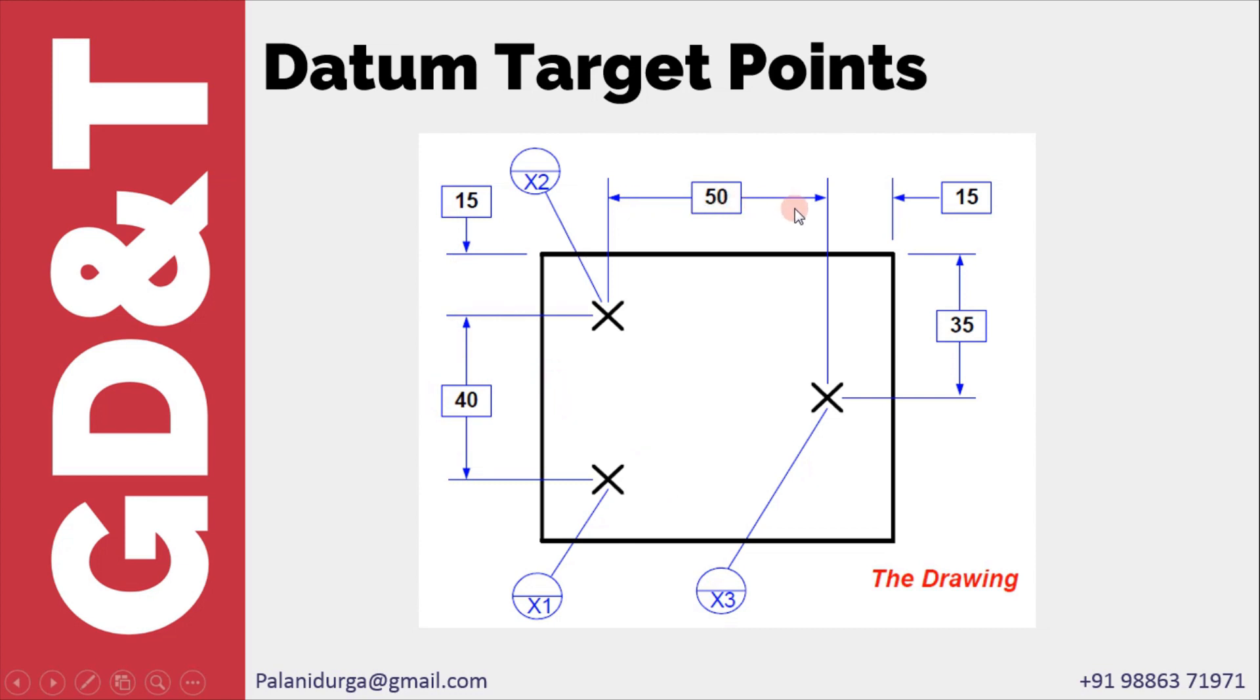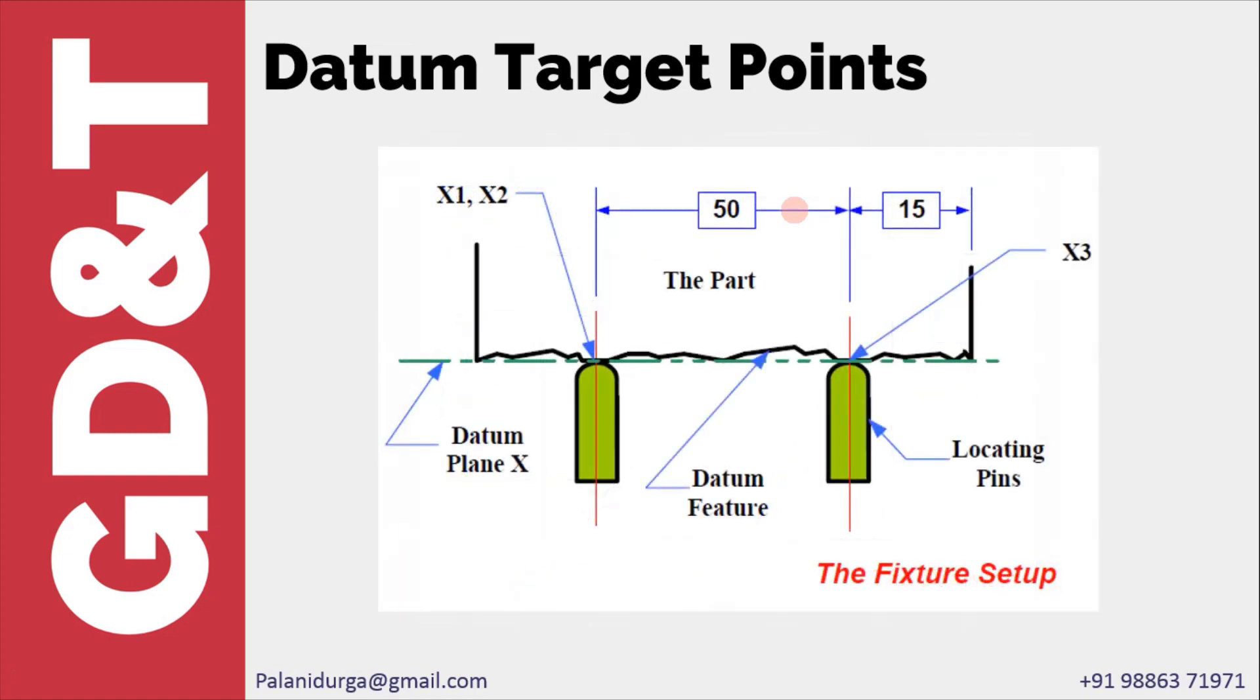If we give the datum targets like this, then in the fixture or on the gauge we have pins with a spherical tip on which the actual part will lie at a distance which is specified in the basic dimensions. Only in case of datum targets, this basic dimension tolerance would be based upon the fixture design tolerance or gauge design tolerance. For this basic dimension we do not have any geometrical tolerance applied.